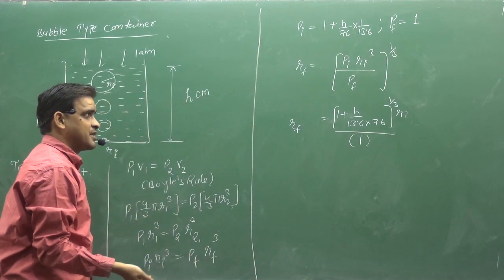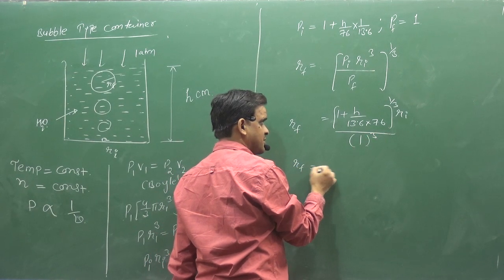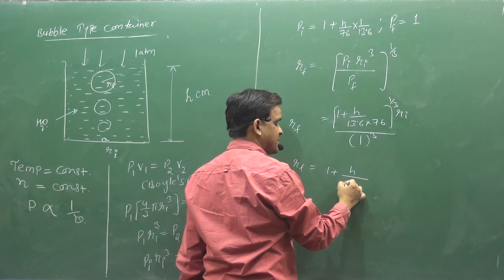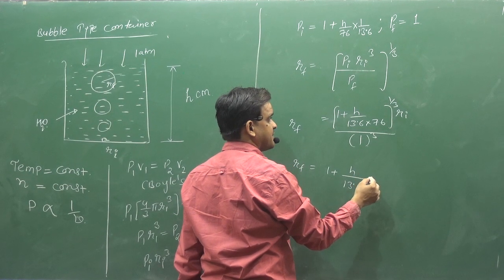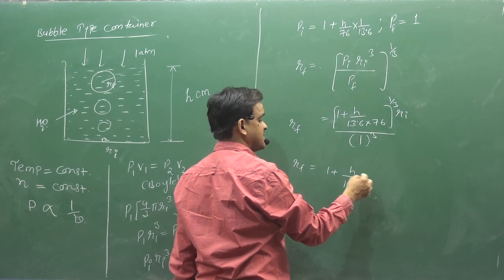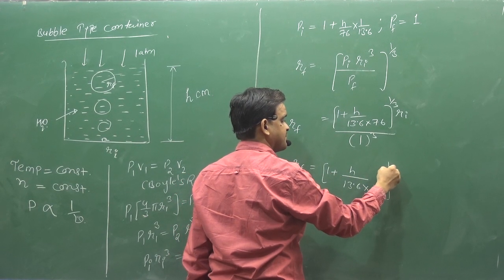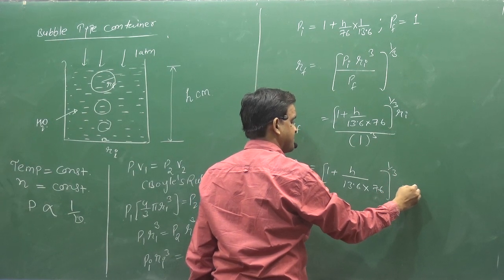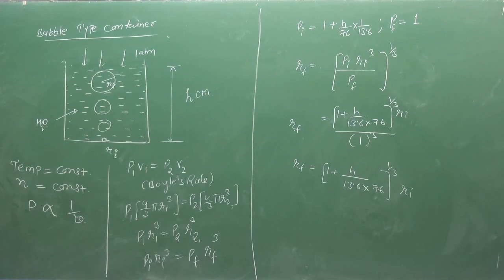So 1 power 3 does not mean. So R final will be 1 plus H upon 13.6 multiply by 76, 1 by 3, multiply by R initial. Follow clear. Write this.